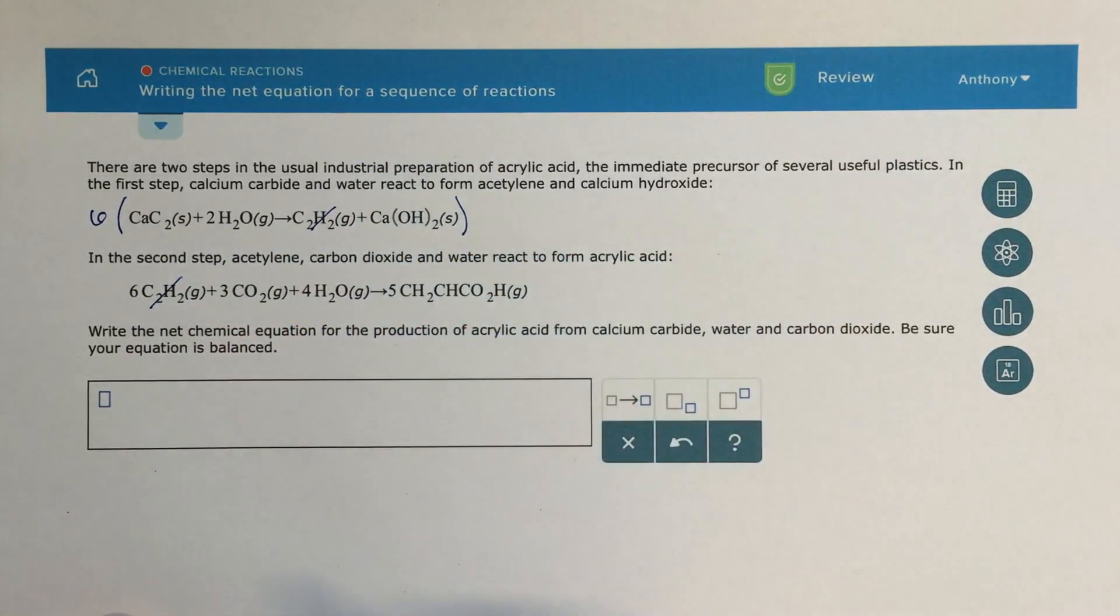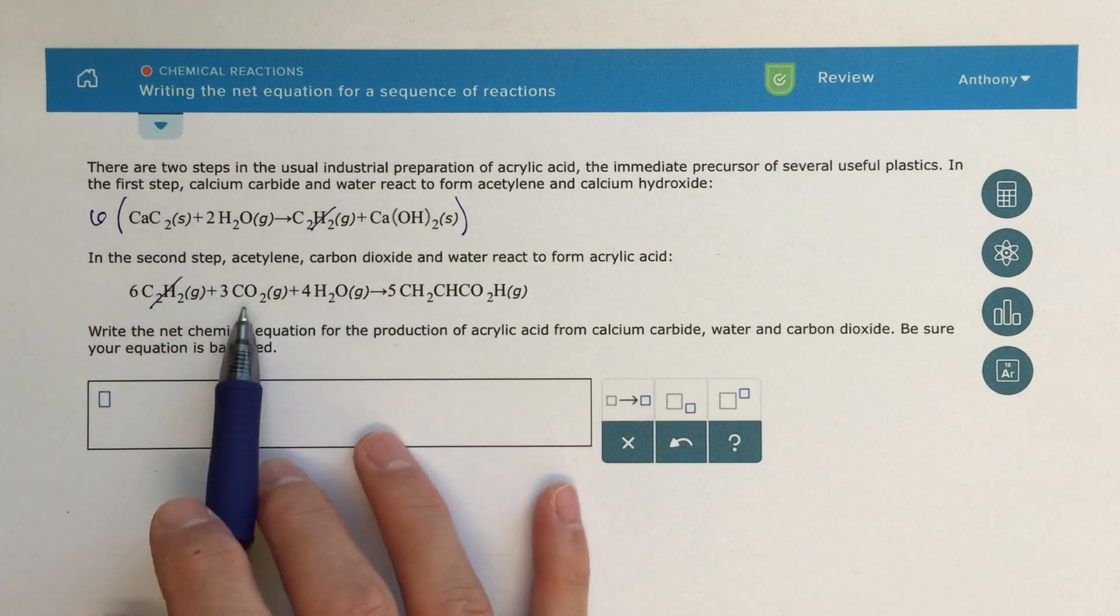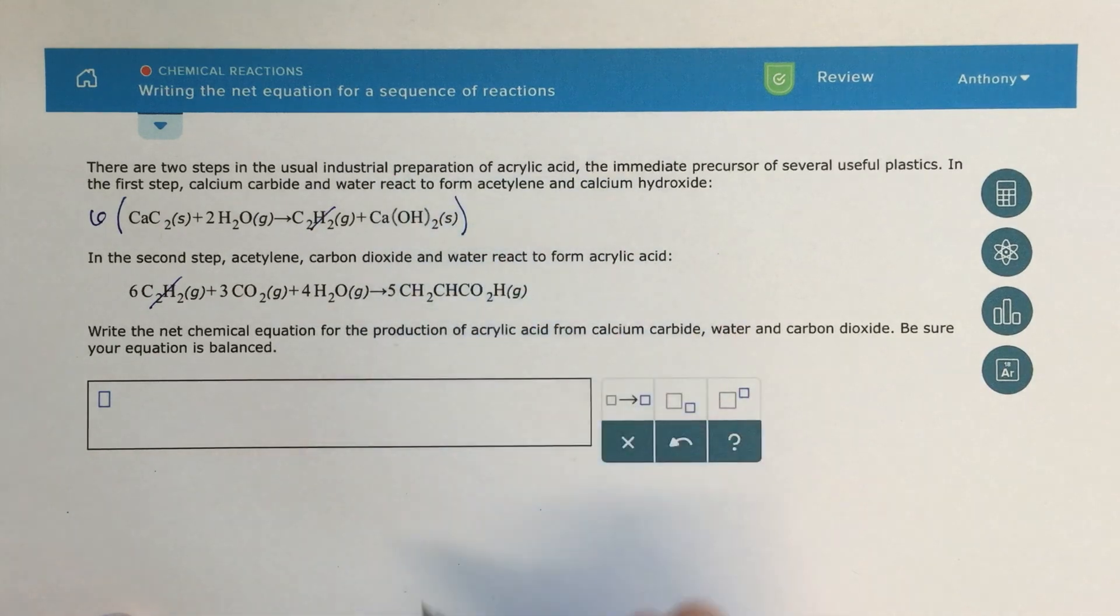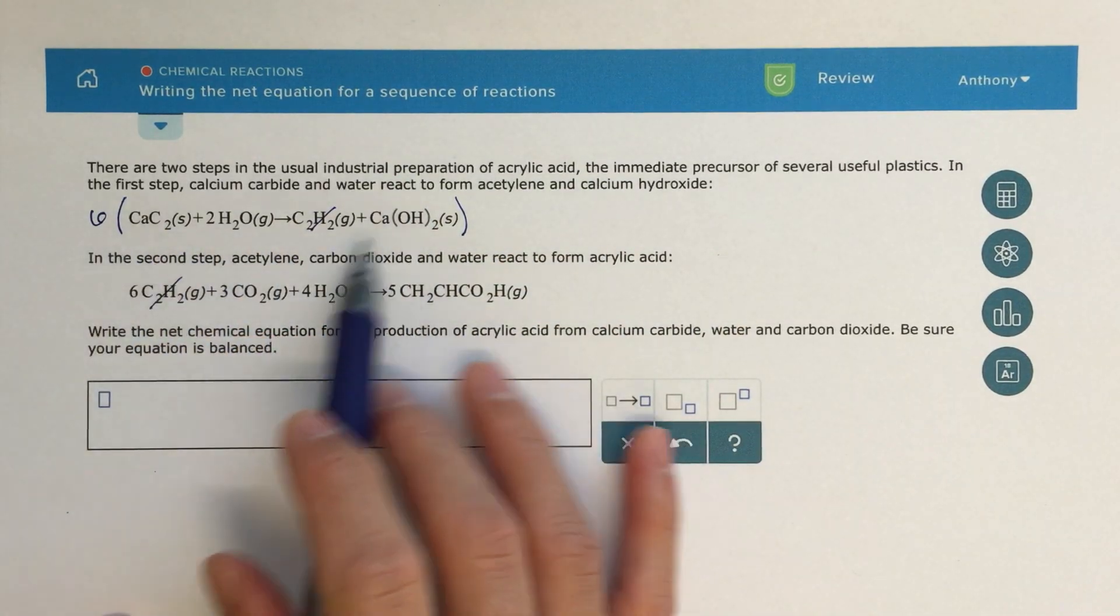So I'm going to be able to cancel out my intermediate when I write my net ionic equation. So, when you're writing your net chemical equation, all you're going to be doing is taking everything from the reactant side, bringing it down, and then everything from the product side, and bringing that down. Now we have to keep in mind, I need to multiply everything by six.